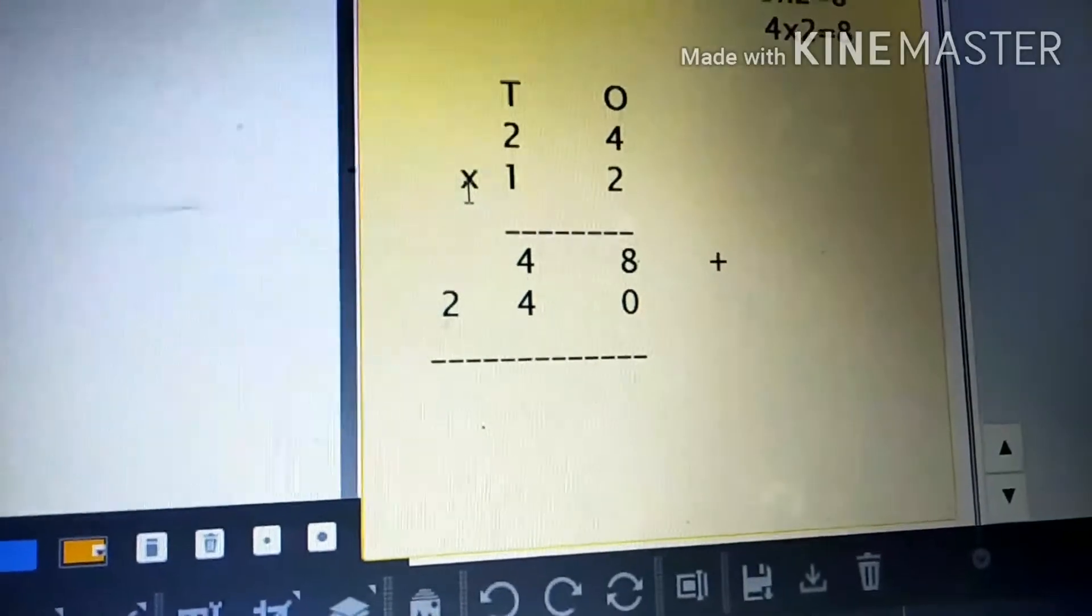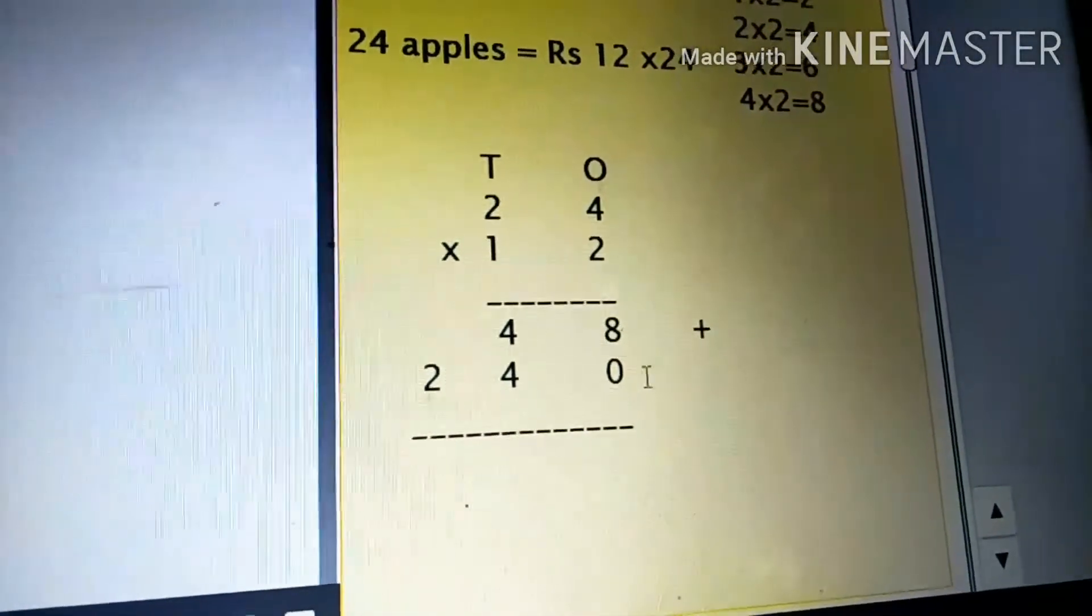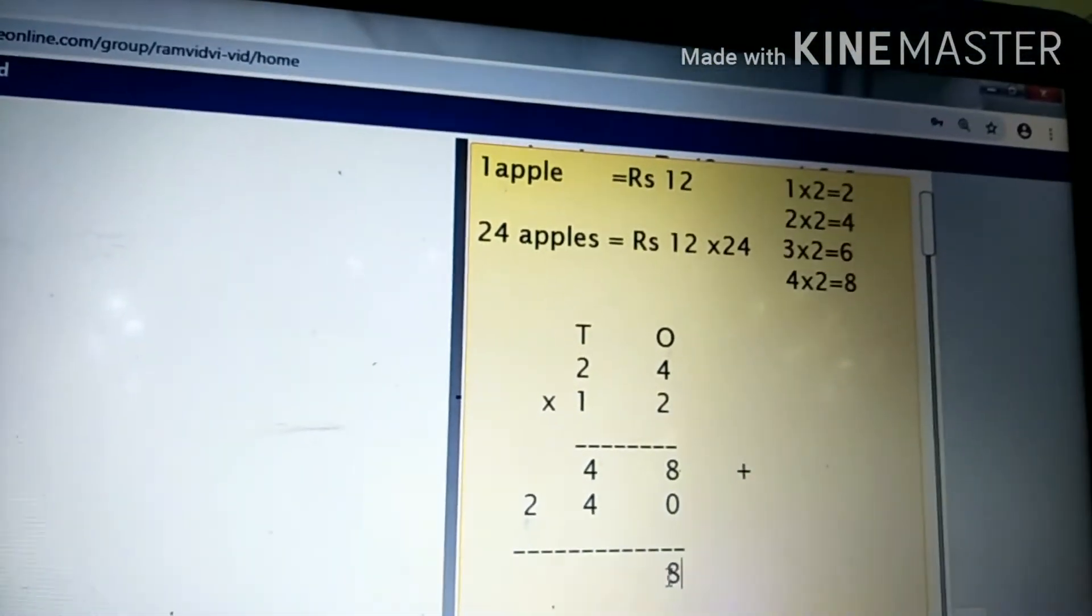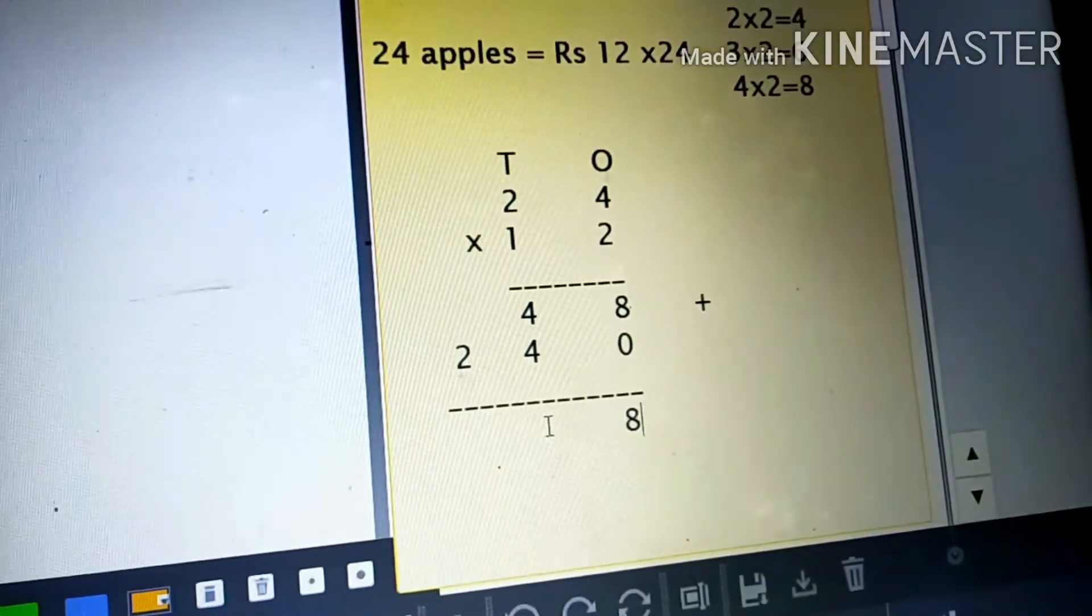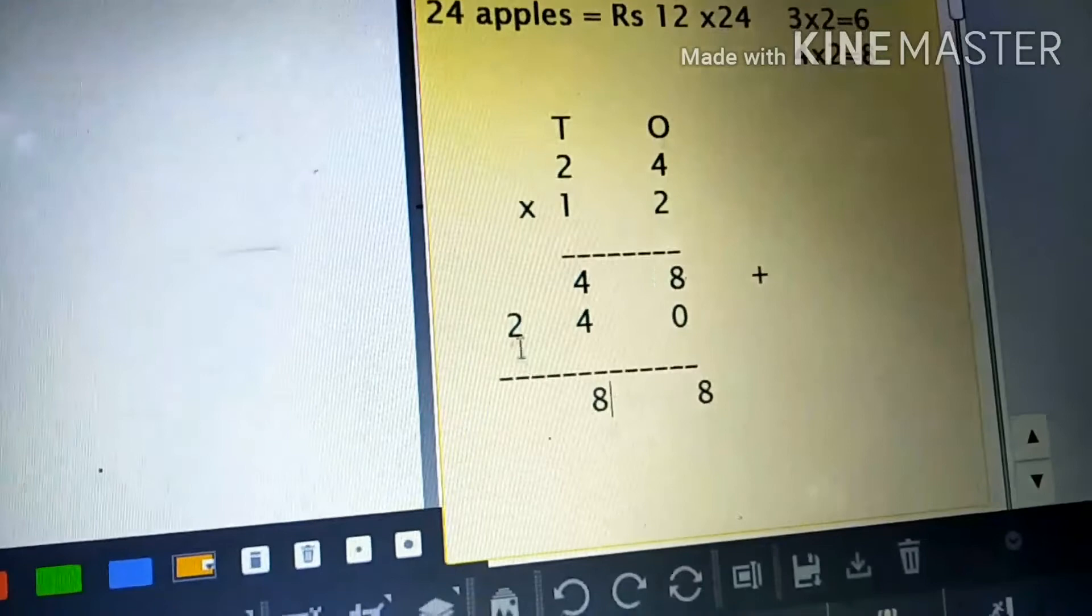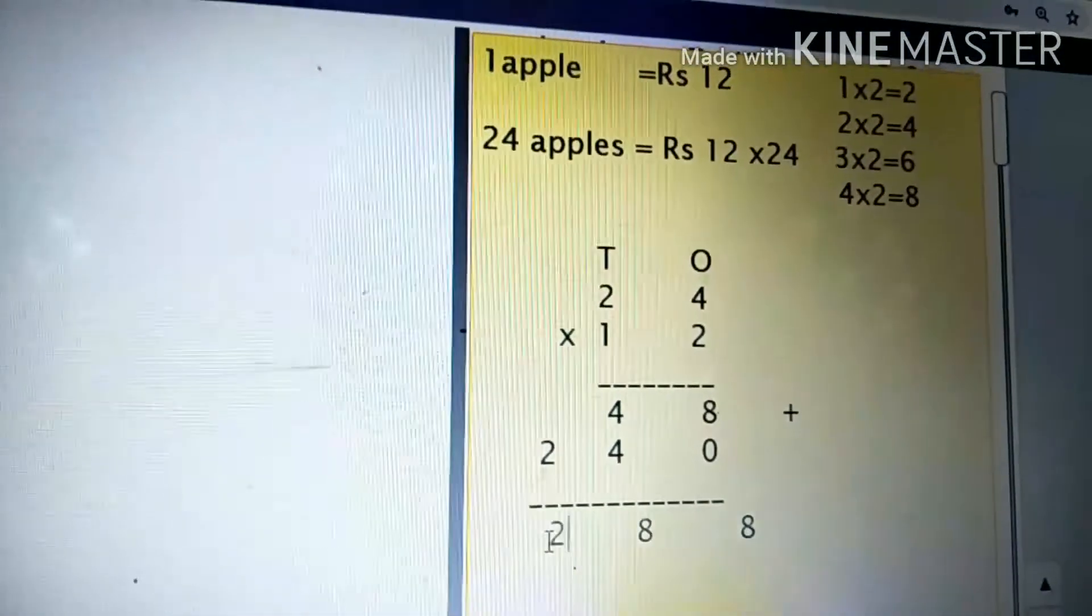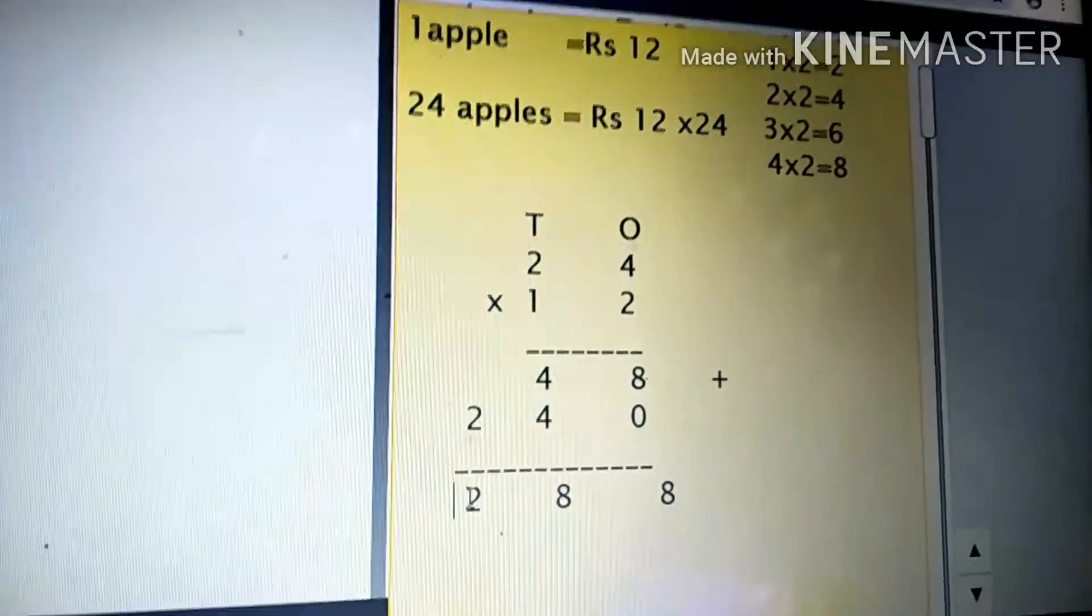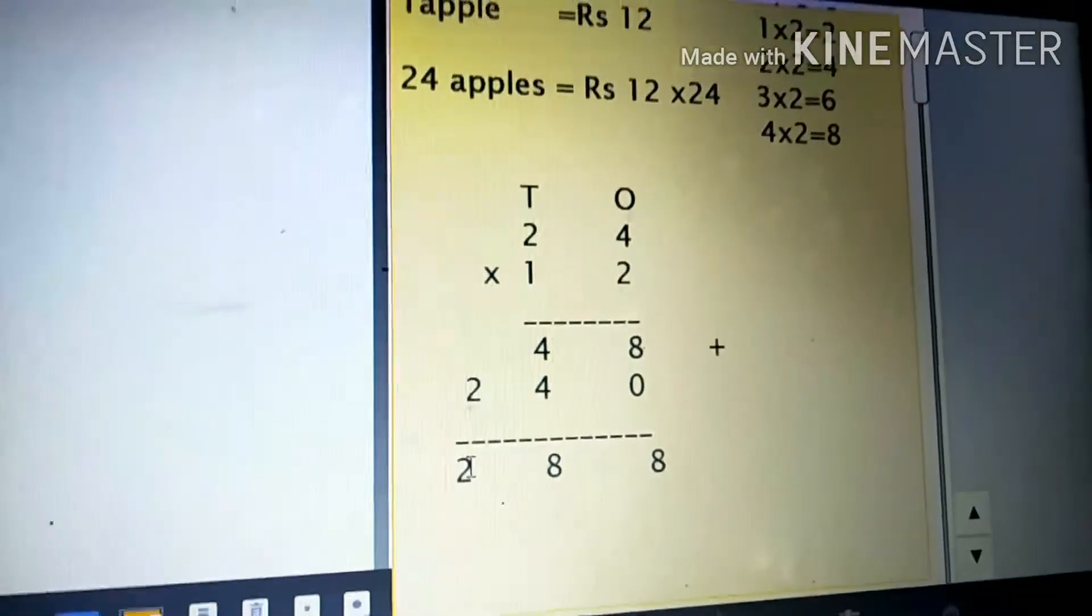Finally, we add the two numbers together for the answer. Eight plus zero equals eight, so under the ones place, eight. Then four plus four equals eight, so under the tens place, eight. Then in the hundreds place we have two alone, so I put under the hundreds place, two. So our answer is two hundred and eighty-eight rupees for twenty-four apples.